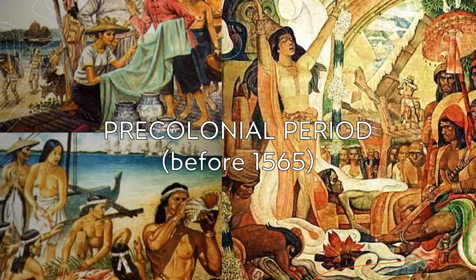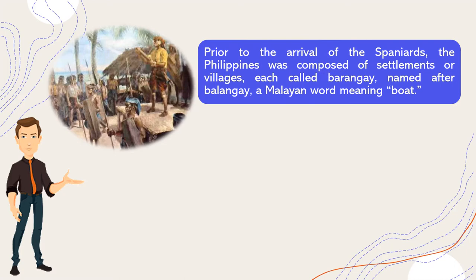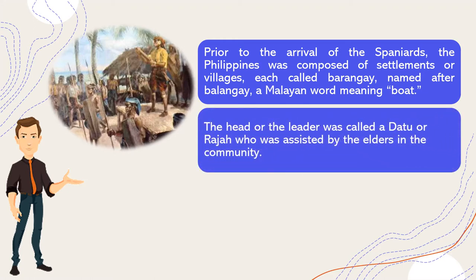Pre-colonial period before 1565. During the island's pre-colonial period, indigenous peoples engaged in healthy trade with various cultures and economies in the region, which gave way to a long colonial period, first under Spain for over 300 years, and then under the United States, during which it came briefly under Japanese occupation in World War II. Prior to the arrival of the Spaniards, the Philippines was composed of settlements or villages, each called Barangay, named after Balangay, a Malayan word meaning boat. The head or the leader was called Datu or Raha, who was assisted by the elders in the community.